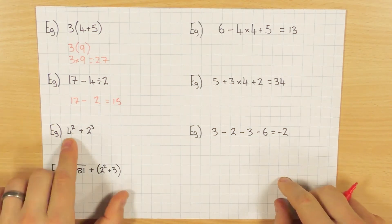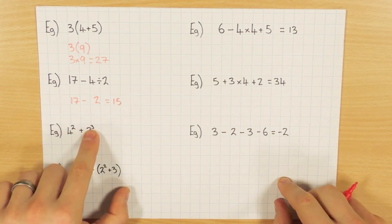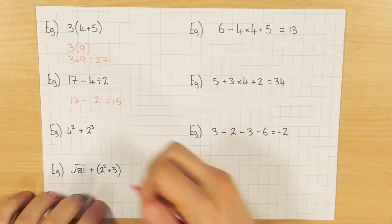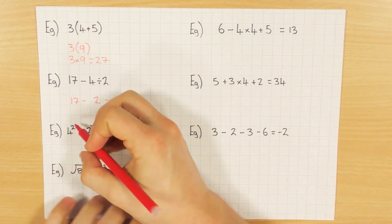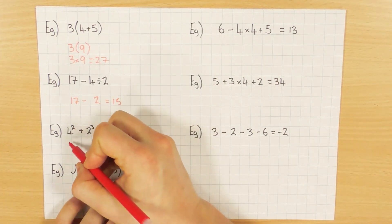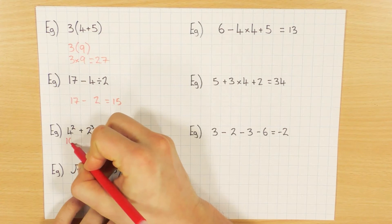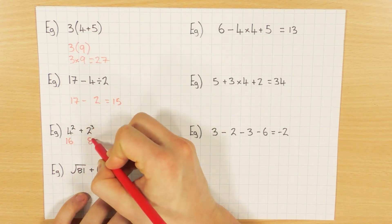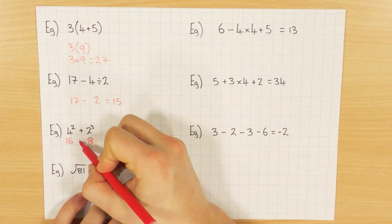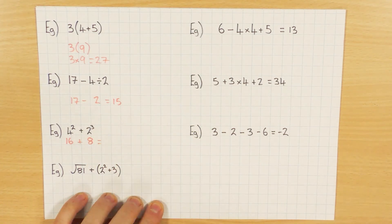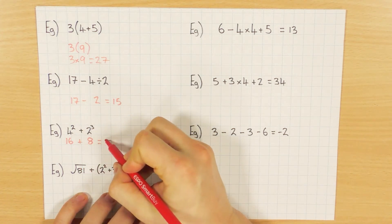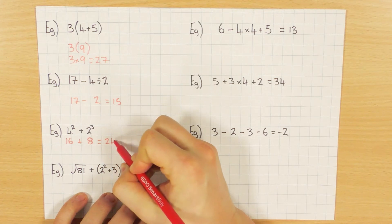This one has indices and an addition. Indices comes first — it's the second thing in BIDMAS. So 2 cubed: 2 times 2 times 2 is 8. Bring the addition down and finish it off: 16 plus 8 is 24.